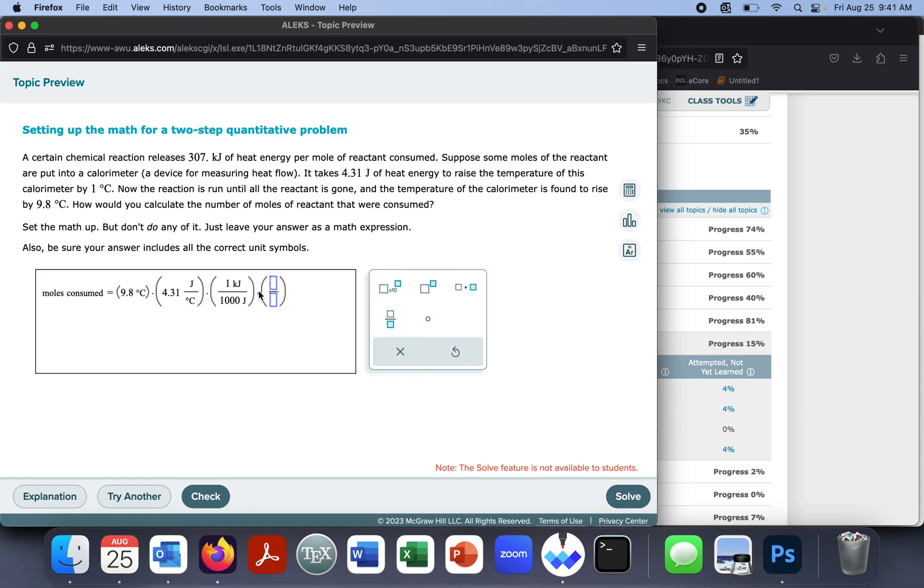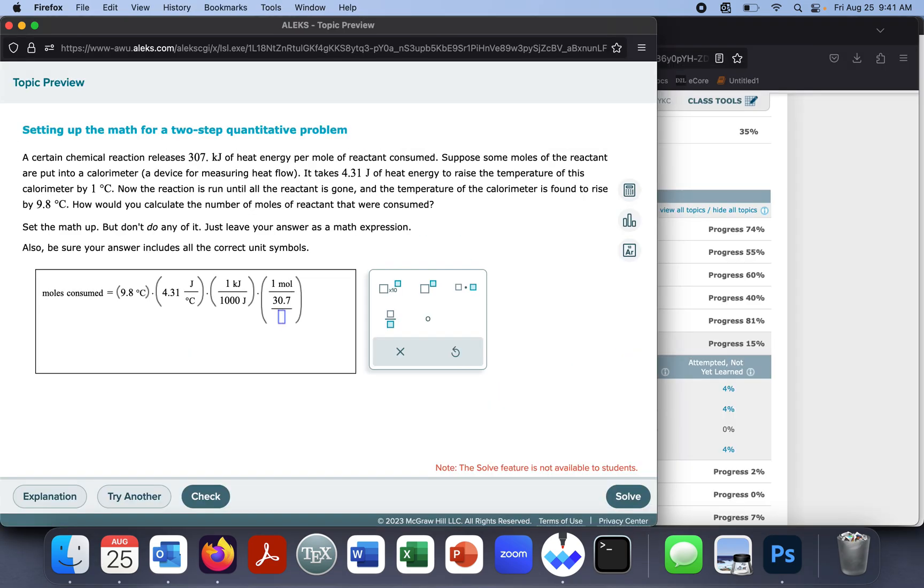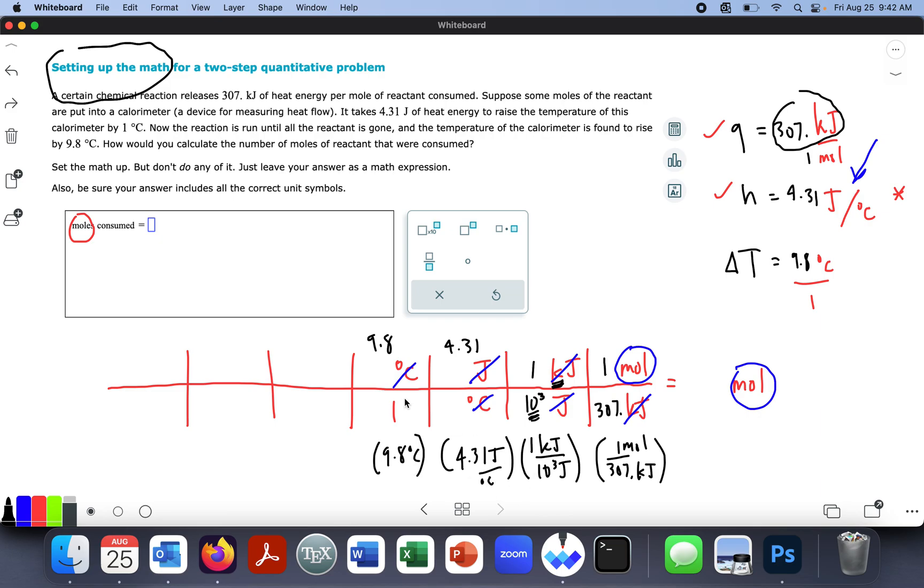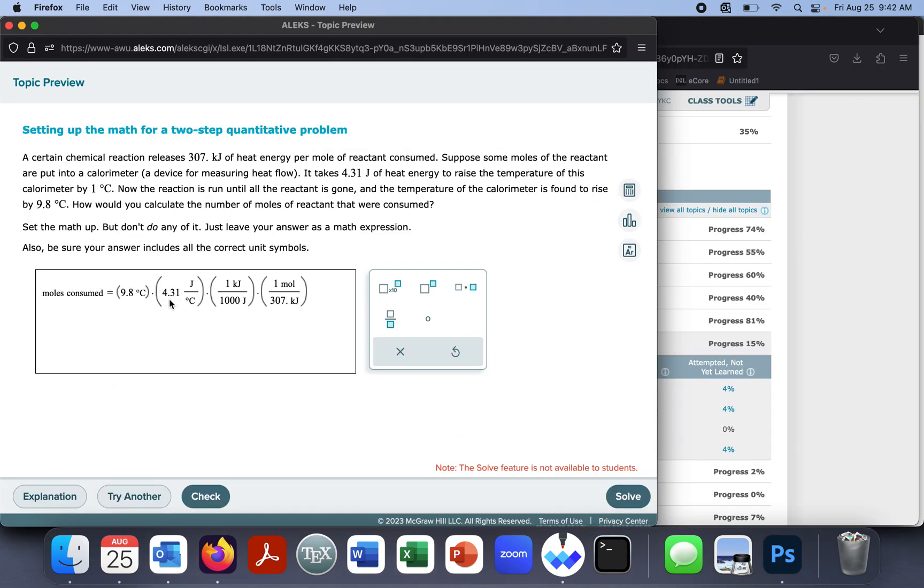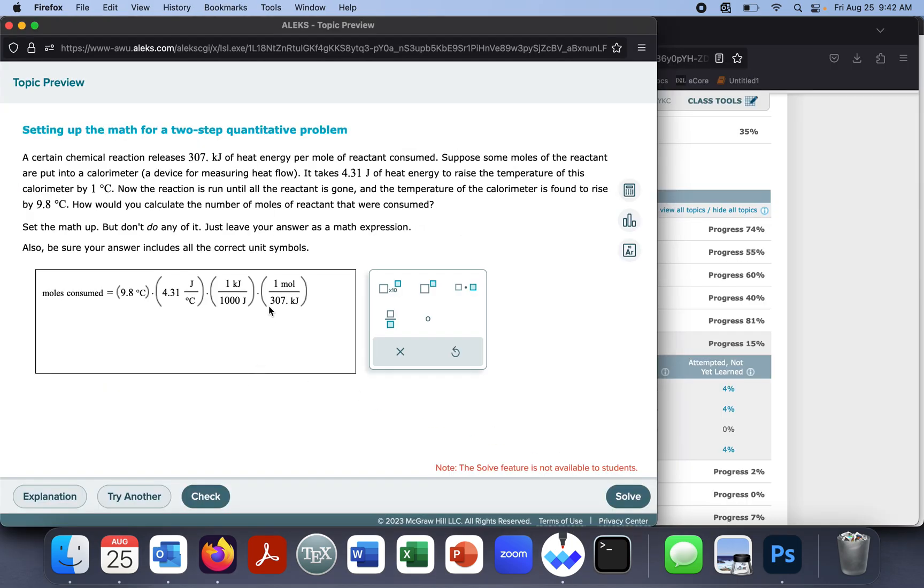And the next one was 1 mole, let's do this, it's a fraction, 1 mole over, what was it? 3.07, 307 kilojoules. So let's just make sure we got that in there correctly, 9.8, 4.31, 9.8, 4.31, 1 over 1,000, there's my 1 over 1,000, and then 1 over 3.07. Degrees Celsius cross off, joules cross off, kilojoules cross off, and I'm left with moles. And that's what I wanted, moles consumed.